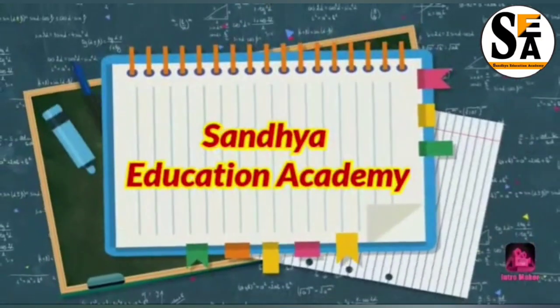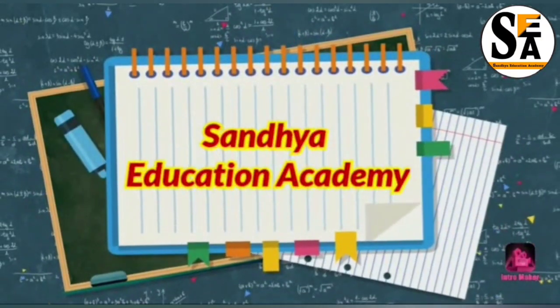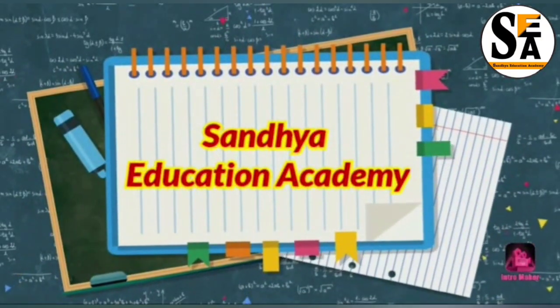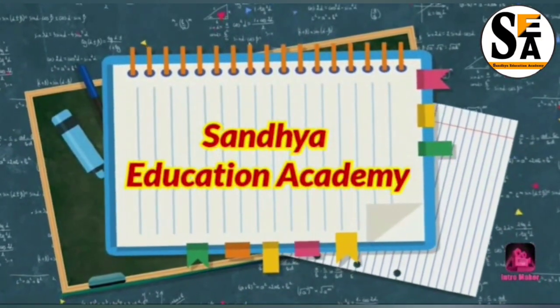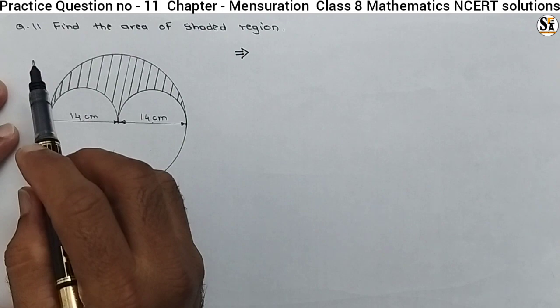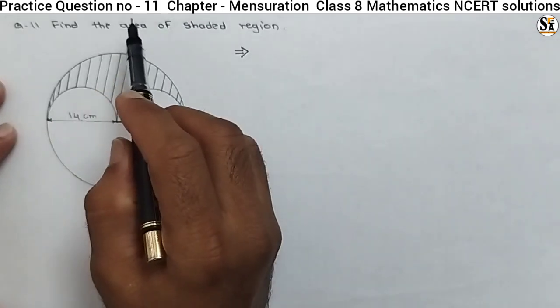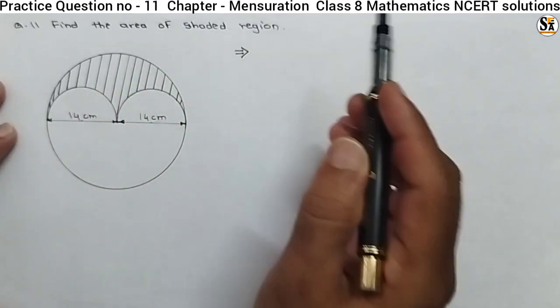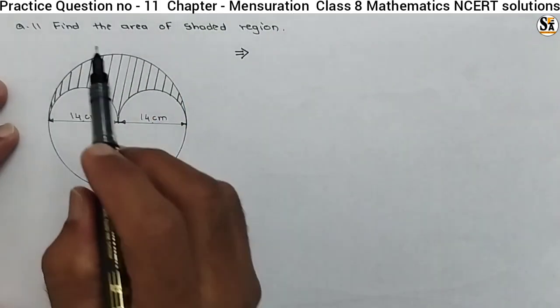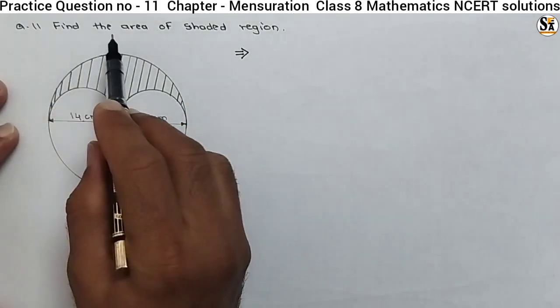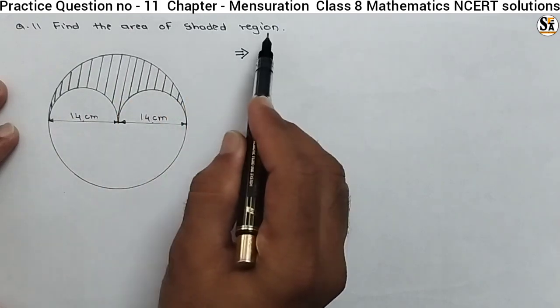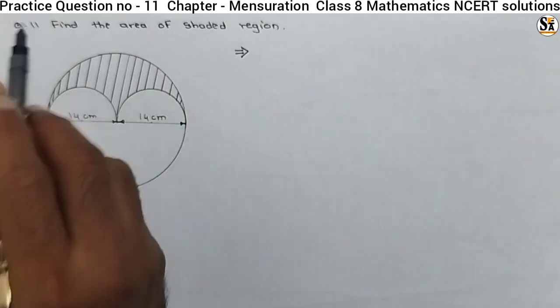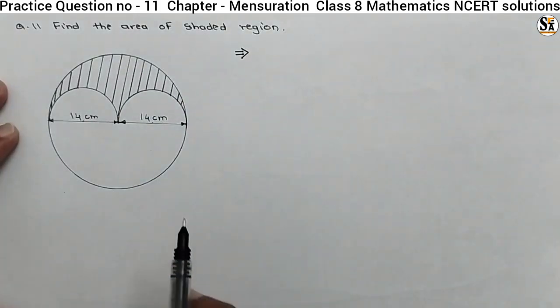Hello dear all, welcome to Sunday Education Academy. I am Santosh Vav. This is the practice question for the mensuration chapter, class 8 mathematics. The question is: find the area of the shaded region. This is question number 11.